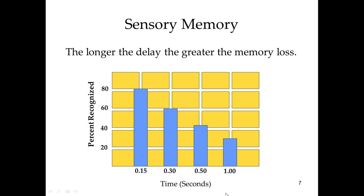At one second delay, only about 30% of information is recalled. Whereas if it's only 0.15 seconds — 15% of a second — we see about 80% recognition. So time delay has a pretty profound impact on your ability to remember sensory information.